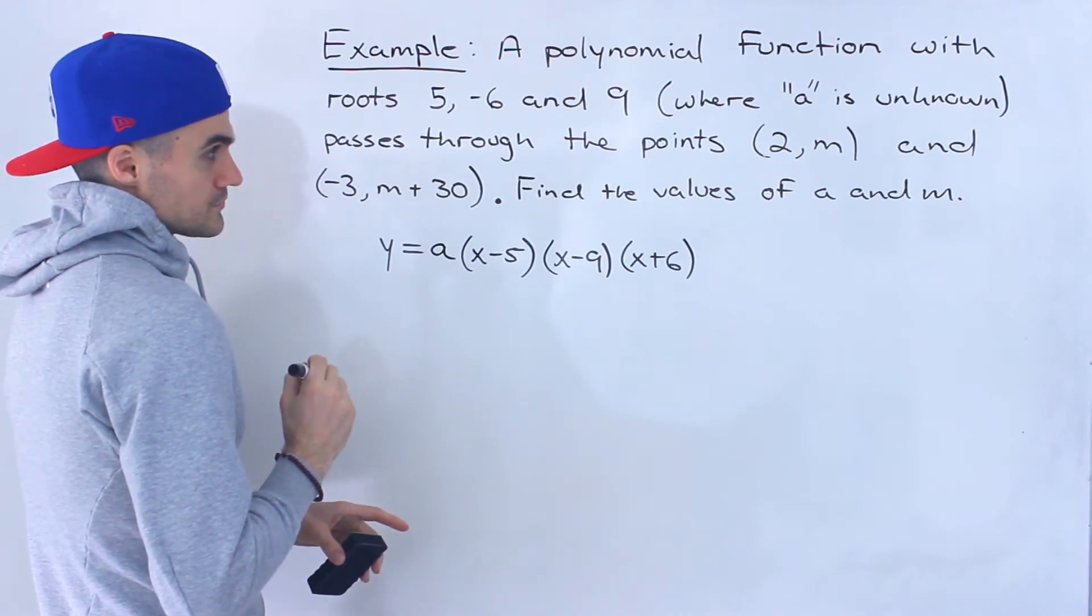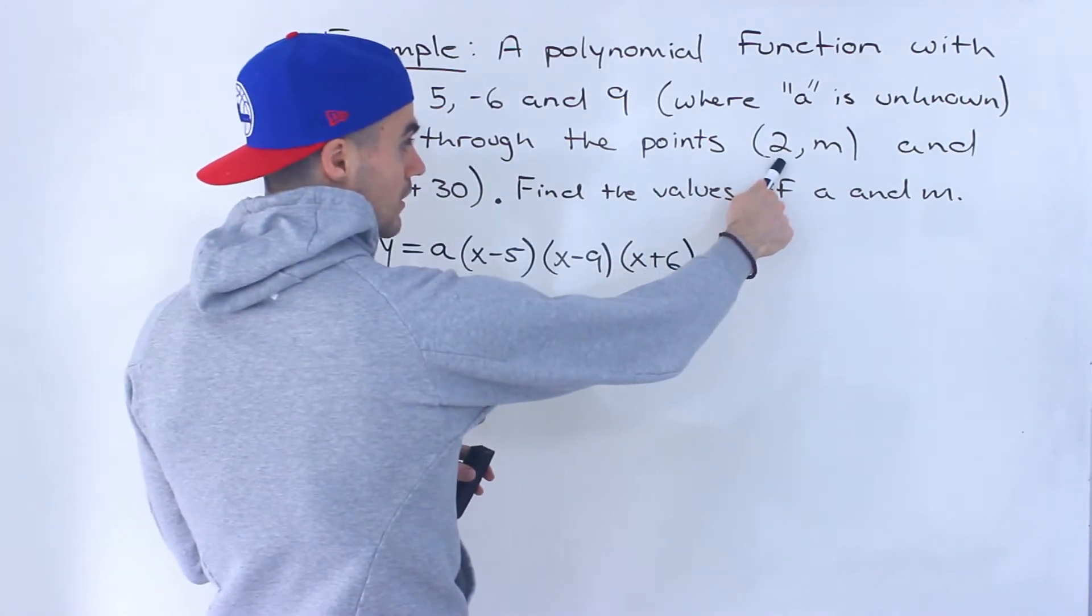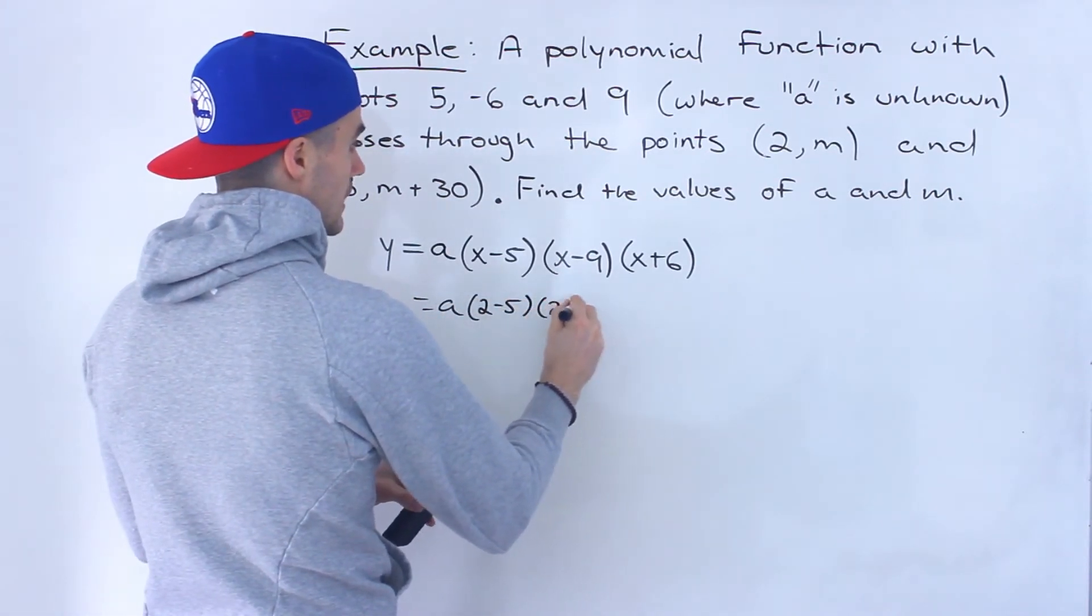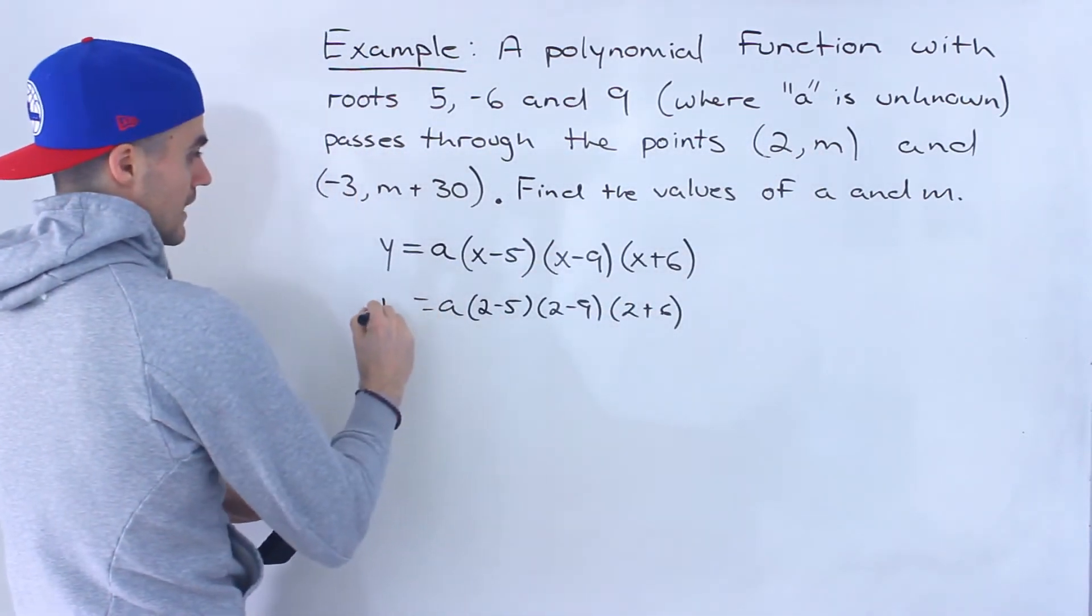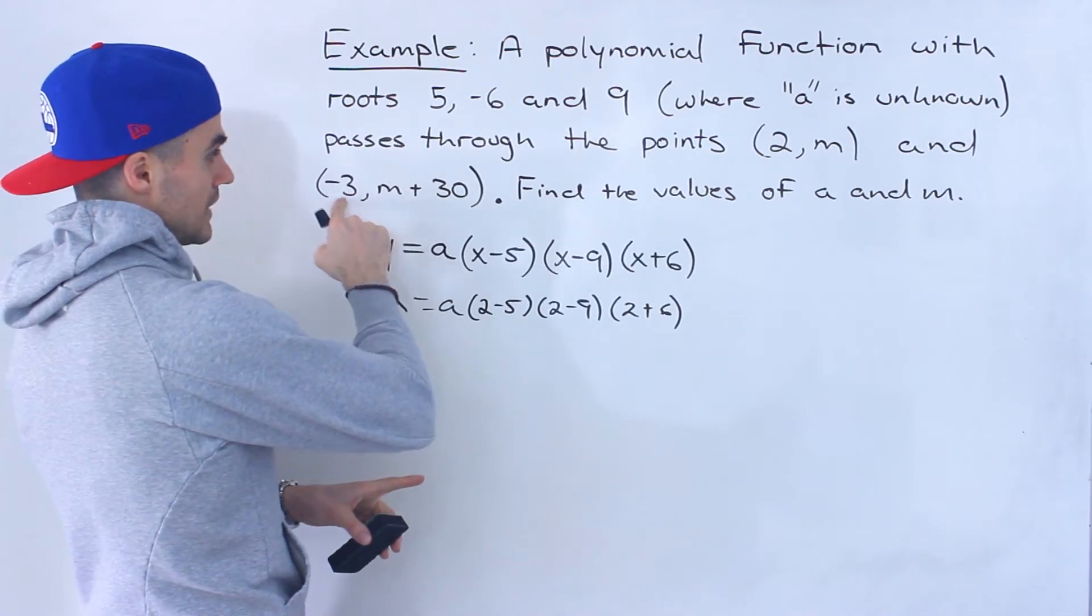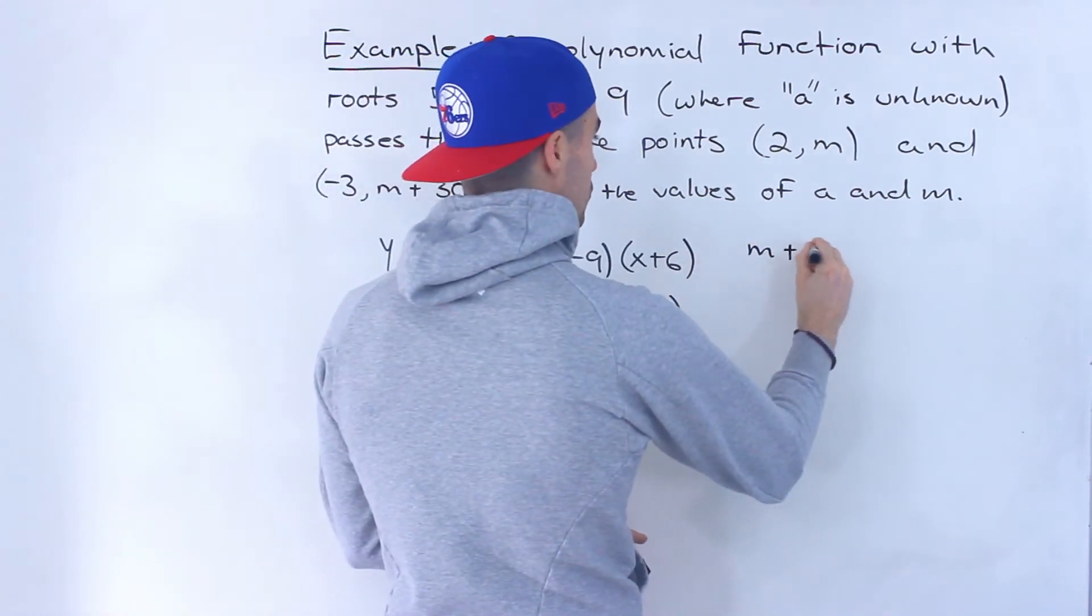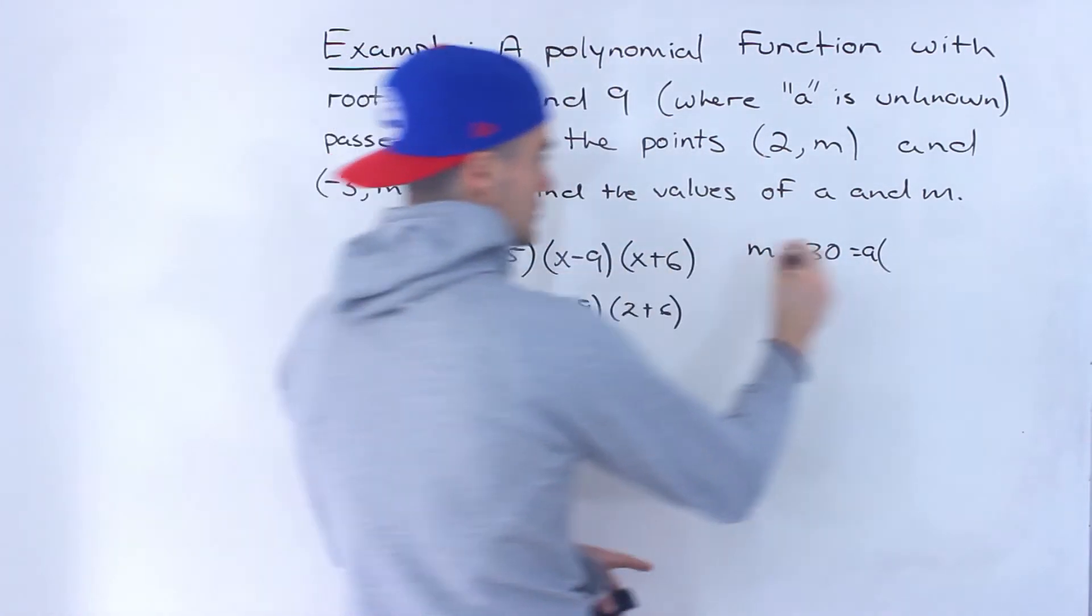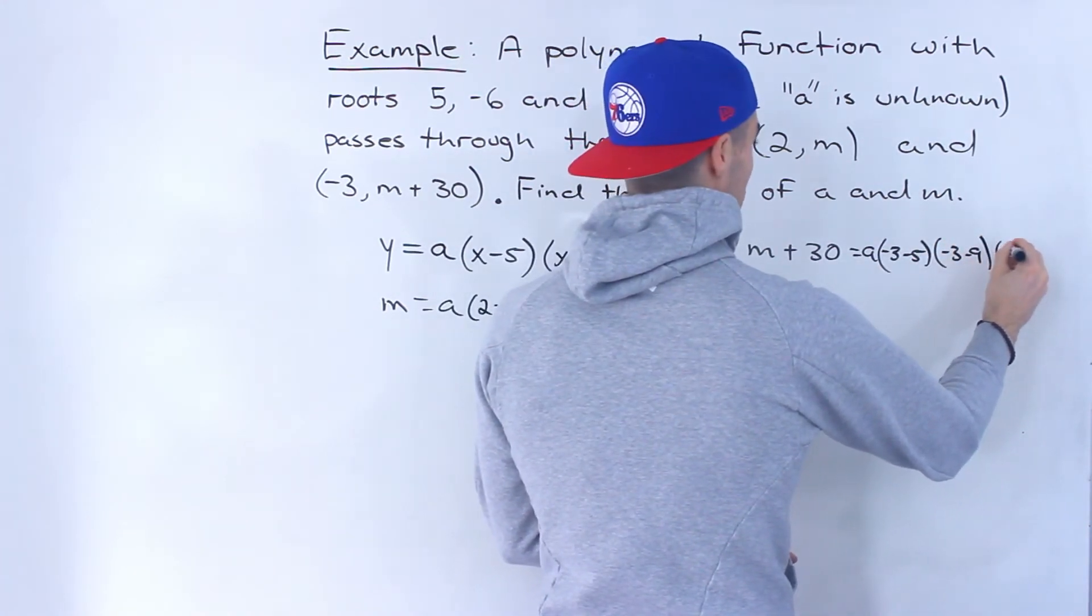So what we can do is we can actually set up two equations with this information. So we could take this first point here and plug in 2 for all the x values. So we'd have 2 minus 5, 2 minus 9, and then 2 plus 6. And then notice that the Y value is M. So we got one equation over here and then we could create another equation with this point. So we plug in negative 3 for all the x values and M plus 30 for the Y value. So we'd have M plus 30 equals that A value still unknown. And now we would plug in negative 3 for all the x values. So we'd have negative 3 minus 5, negative 3 minus 9, and then we have negative 3 plus 6.